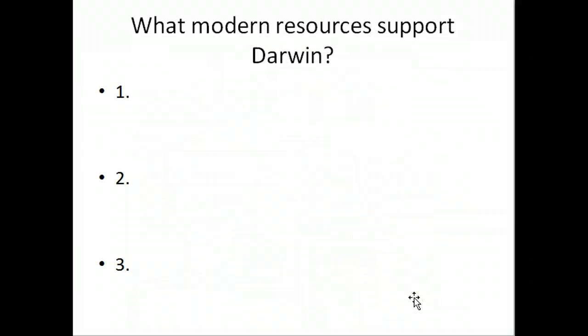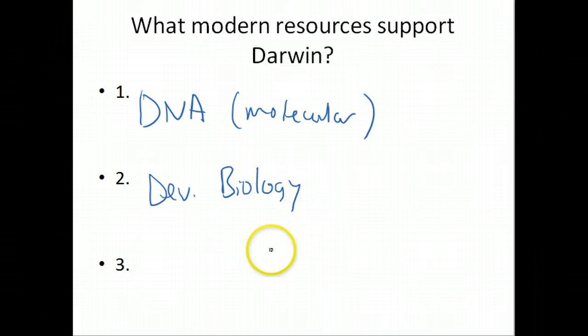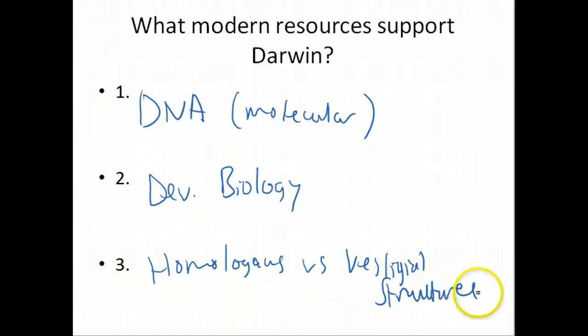Some modern support for Darwin's theory. Well, today the slam dunk evidence is DNA. This is molecular evidence of evolution. If you compare DNA from a chimp and a human, you'll find that they're roughly 98% similar. So DNA is always kind of the go-to means for comparing whether or not two things are related. We also have developmental biology. And this is the picture in your textbook where a chick embryo looks a lot like a human embryo at a certain developmental time point. And last one, we have homologous versus vestigial structures. You guys know the definitions of these. I'm not going to spend a whole lot of time here going over those.